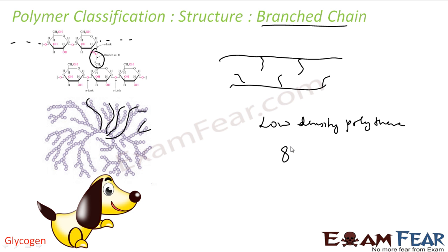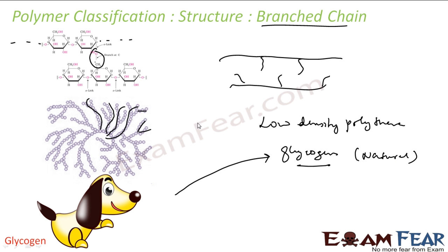Now, talking about glycogen and low-density polythene from the source perspective: glycogen is a natural polymer, while low-density polythene is artificial or synthetic. So a given polymer can be classified from the source perspective as well. From the structure perspective, both glycogen and LDPE are branched chain polymers.